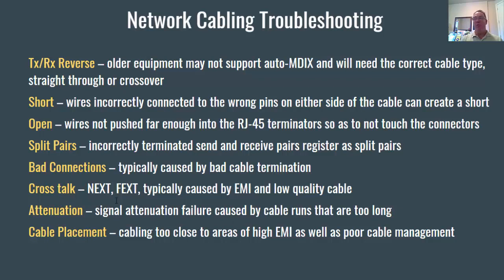Crosstalk is where ones and zeros can jump from one pair of wires to another. NEXT is near-end crosstalk, and FEXT is far-end crosstalk — typically caused by electromagnetic interference and low-quality cable. Attenuation is where the signal voltage gets weak — signal attenuation failure is caused by cable runs that are too long, over 100 meters, so you're not registering ones and zeros properly at the NIC. Cable placement near areas of high electromagnetic interference will also cause problems. Those are some troubleshooting scenarios with copper cabling.